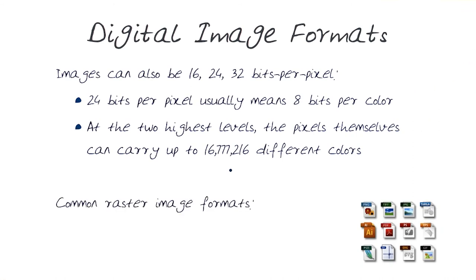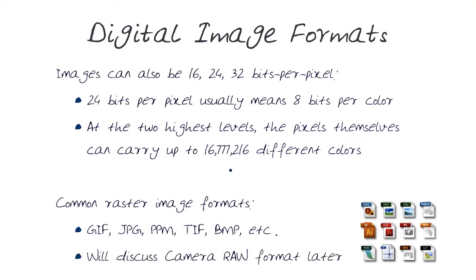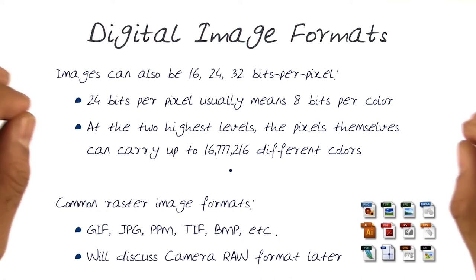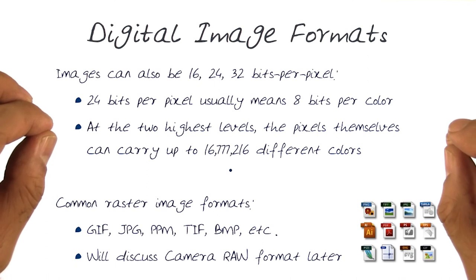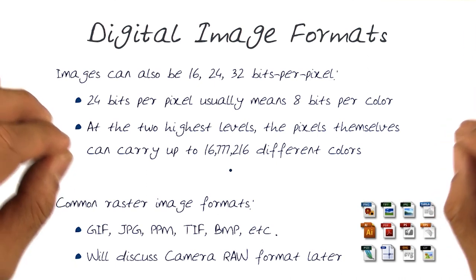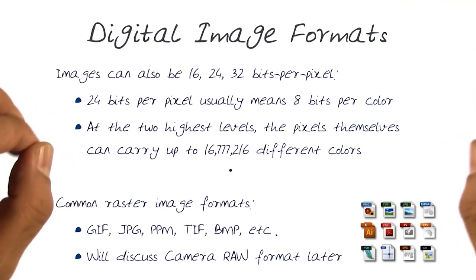Common raster image formats — things you've seen from your cameras — allow you to look at images in various formats. GIF, JPEG, PPM, TIFF, BMP, and many other varieties exist. I'm not discussing the camera raw format today; we'll talk about that later, because it's a special format that captures information directly from the sensor and stores it into a file for later post-processing.